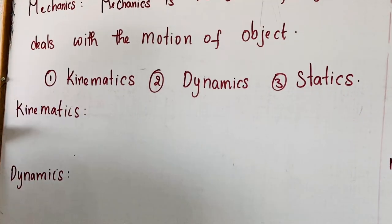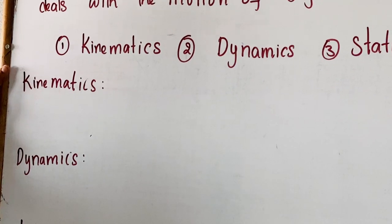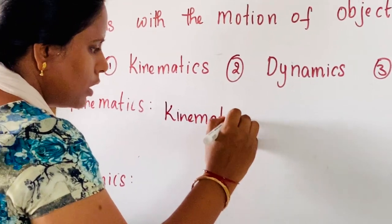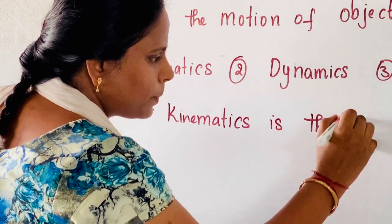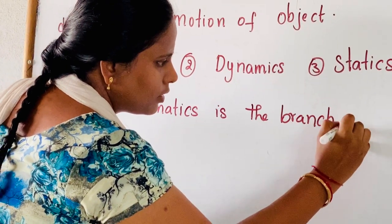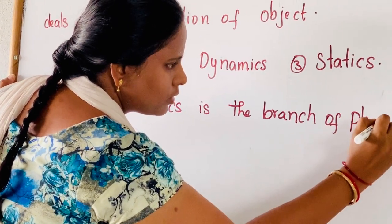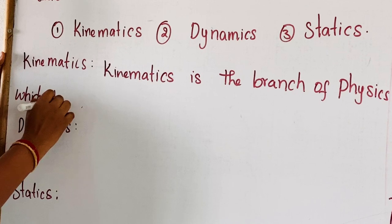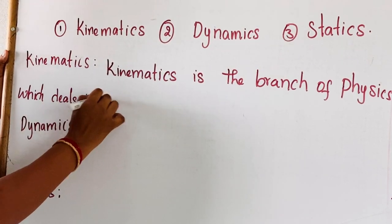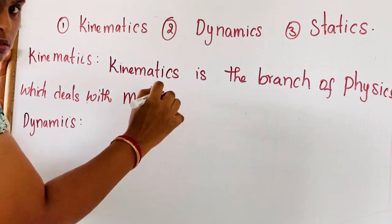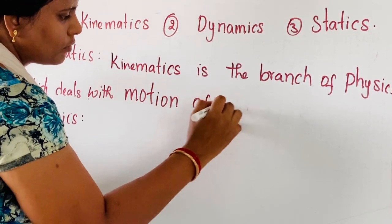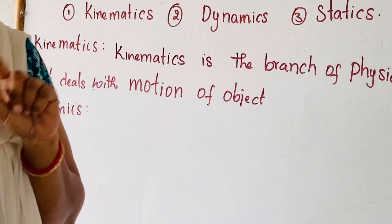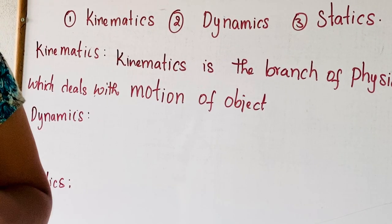Now kinematics. Kinematics is the branch of physics which deals with the motion of the object. Now here when we are dealing with kinematics, we are not going to consider the cause of motion.